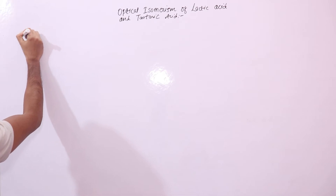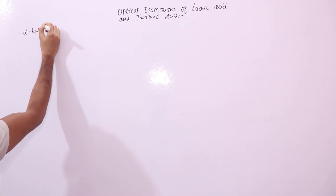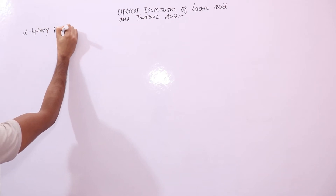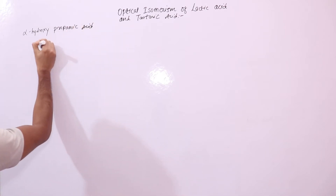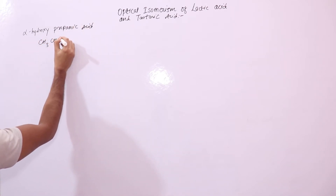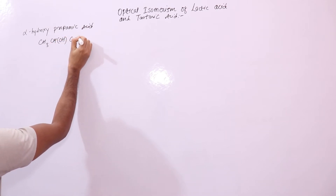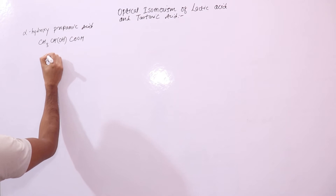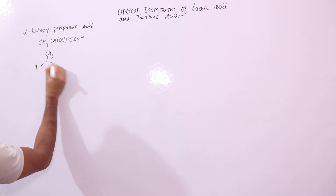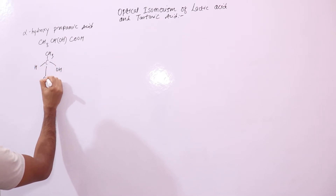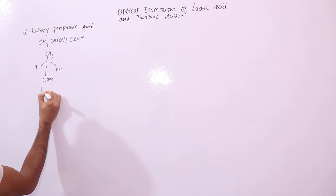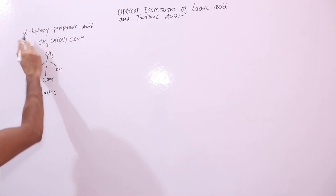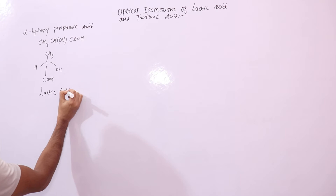Lactic acid is alpha hydroxy propanoic acid. Its formula is CH3CHOHCOOH. This is how you draw it — this is your lactic acid, alpha hydroxy propanoic acid.